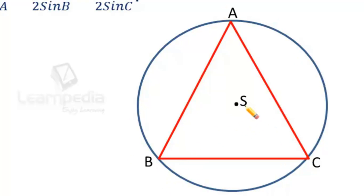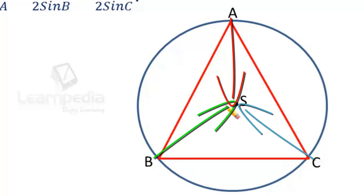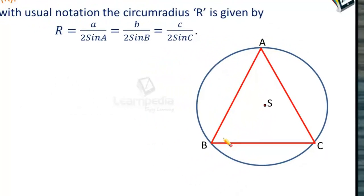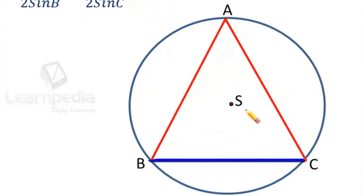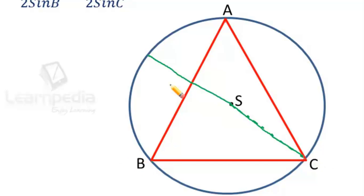If S denotes the center of the circumcircle, also called the circumcenter, then the radius is the distance from any vertex to this center — that is AS, BS, or CS — and all three distances are equal, denoted by R. To find an expression for R, similar to the sine rule construction, on side BC let us join CS and extend CS further to a point D on the circle, so that CD is the diameter of the circle.